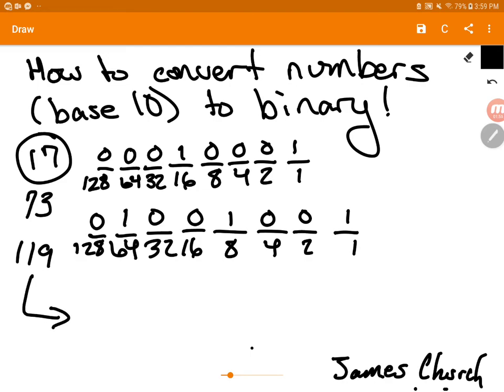Finally, I want to do one more example. Let's do 119. Let's do our 8 digits: 1, 2, 3, 4, 5, 6, 7, 8. And then let's write the numbers beneath them: 1, 2, 4, 8, 16, 32, 64, 128.